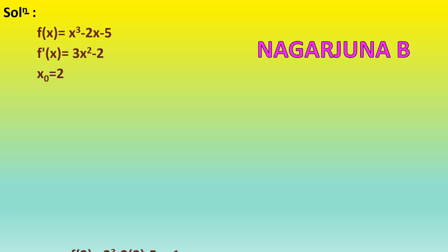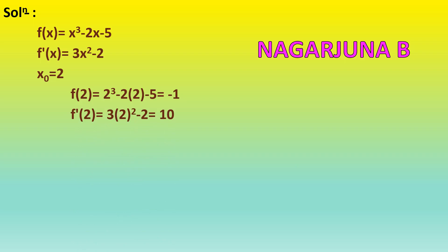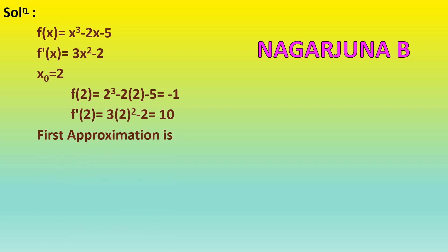f(x₀) = f(2) = 2³ − 2×2 − 5 = −1. Then f′(x₀) = f′(2) = 3×2² − 2 = 10. For the first approximation by Newton-Raphson method: x₁ = x₀ − f(x₀)/f′(x₀).